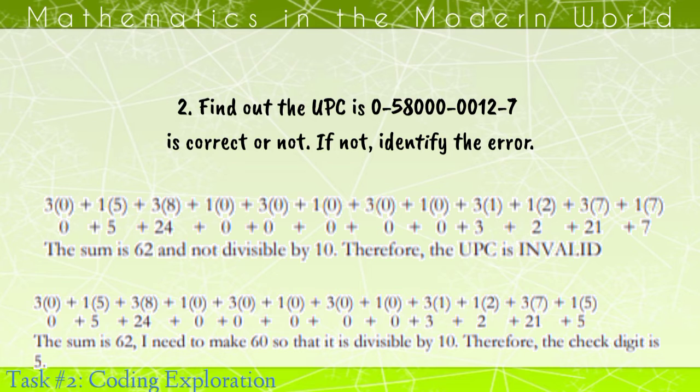Now, to make it valid, I change the check digit. The sum is 62. I need to make 60 so that it is divisible by 10. Therefore, the check digit is 5.